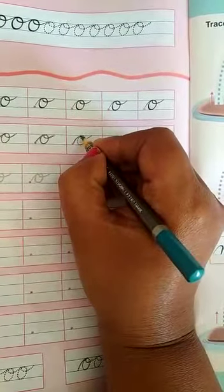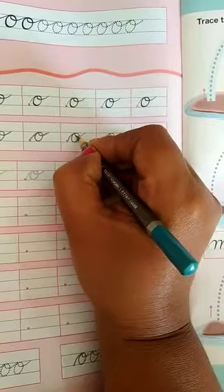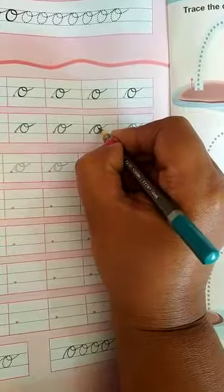Slanting line like this, curve, and a small loop like this. This is small cursive O.